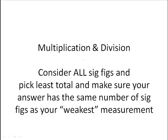Multiplication division. This is a different set of rules. Here you need to understand how to count sig figs, and you have to worry about all the sig figs in each number, and then you're going to pick the least total number of sig figs. Total number of sig figs. And then make sure your answer has the same number of sig figs as that weakest measurement. So we're not dealing with to the right of the decimal anymore. Now we have to count sig figs.